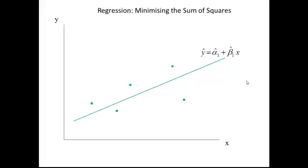Our line has the equation y-hat equals alpha-hat-1 plus beta-hat-1 times x. Alpha-hat-1 is our first guess at the constant of this line, and beta-hat-1 is our first guess at the slope of this line.